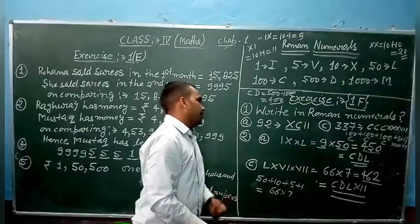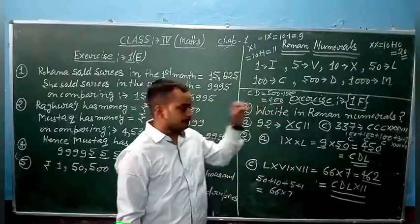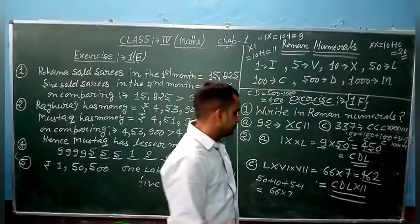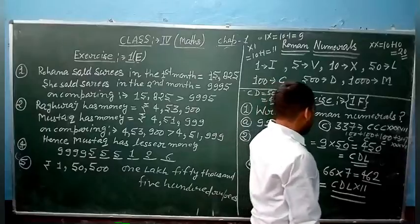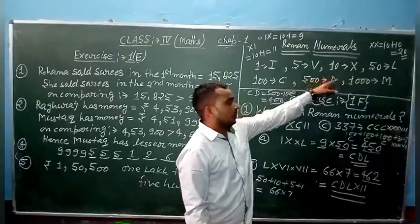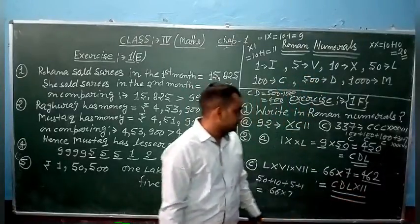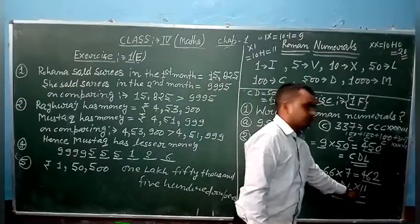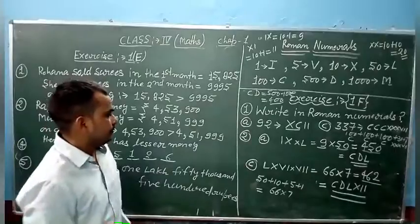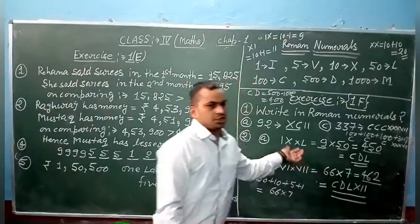We have 462. And we already found out CD for 400. Then 60 is LX. LX means 60. Then 2 is II. So we can find any number using this concept.